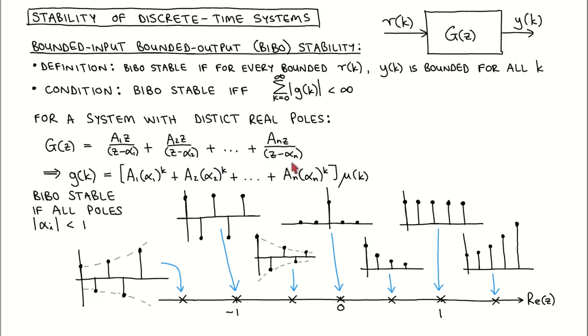If we apply the inverse z-transform to each of these transfer functions, we obtain the impulse response of the system as the sum of exponential components. Let's now look at the time function for one of these exponential components in terms of the location of the pole alpha.